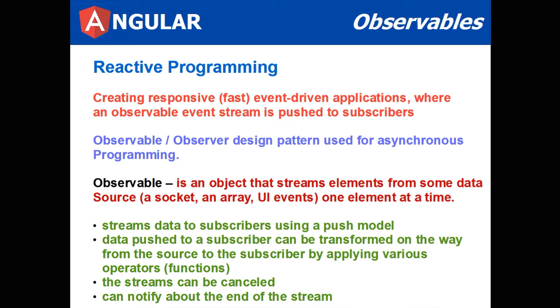Observable observer design pattern is used for asynchronous programming. An observable is an object that streams elements from data source, that is a socket, an array, or UI events, one element at a time.